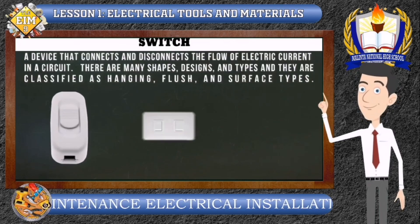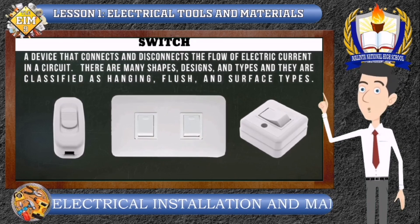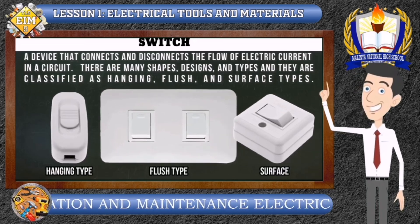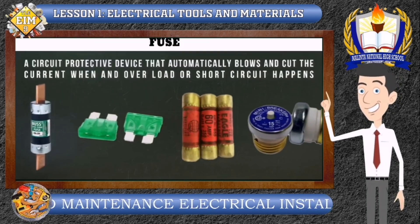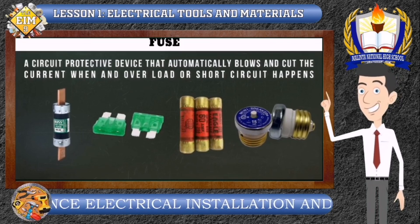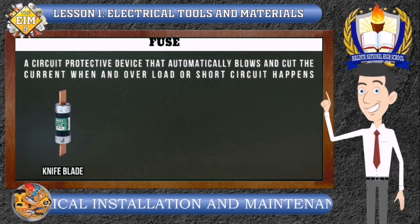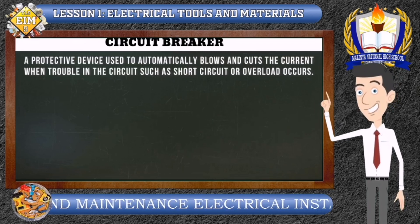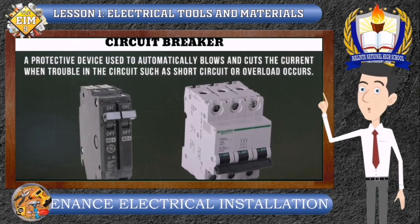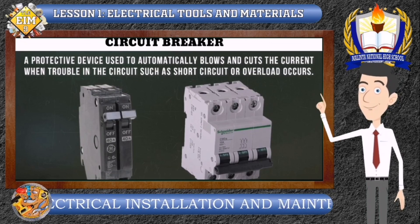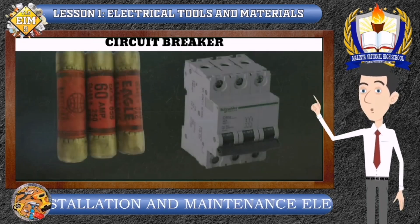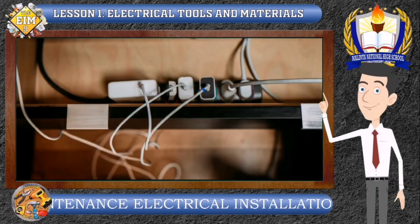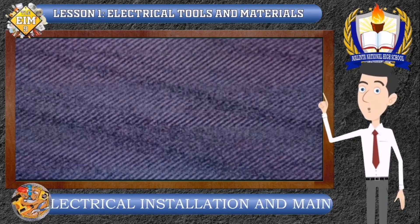Switch. A switch is a device that connects and disconnects the flow of electric current in a circuit. There are many shapes, designs, and types of switches; they are classified as hanging type, flush type, and surface type. Fuse. A fuse is a circuit protective device that automatically blows and cuts the current when an overload or short circuit happens. As you may notice, a fuse and a circuit breaker have the same function. The only difference is that when trouble in the electric circuit occurs, the fuse will be damaged and needs replacement, while a circuit breaker will just switch off and needs to be switched back on.